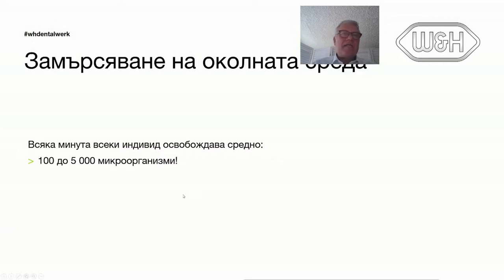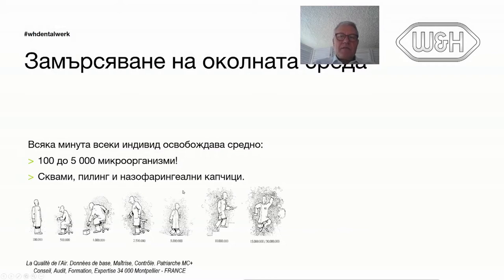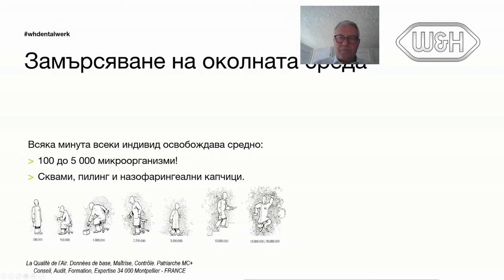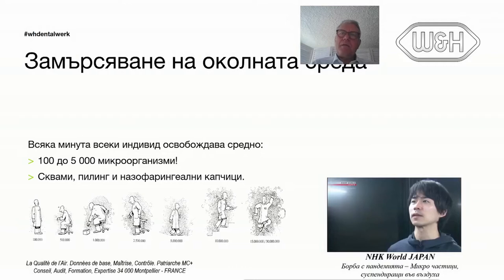When we sneeze, we expose 40,000 droplets. When we cough, it's thousands. Particles released depending on whether you are resting or excited — the more active, the more particles per minute — and these particles contain germs. I want to share a video from Japanese television NHK where a camera captures droplets, aerosols, and particles. When we talk about aerosols, these are particles below 50 microns; above 50 microns we call them droplets or splatters.